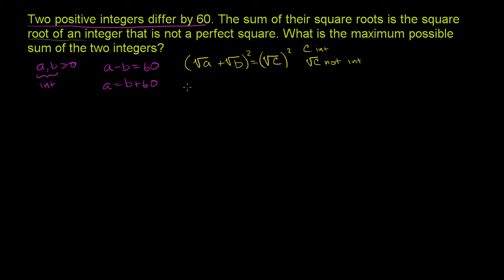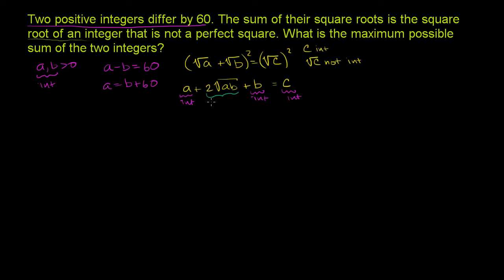Squaring both sides, we get: square root of a times square root of a, which is a, plus 2 times the square root of a times the square root of b — which is 2 times the square root of ab — plus b squared, which is b, is equal to c. Now we know that a is an integer, b is an integer, and c is an integer.